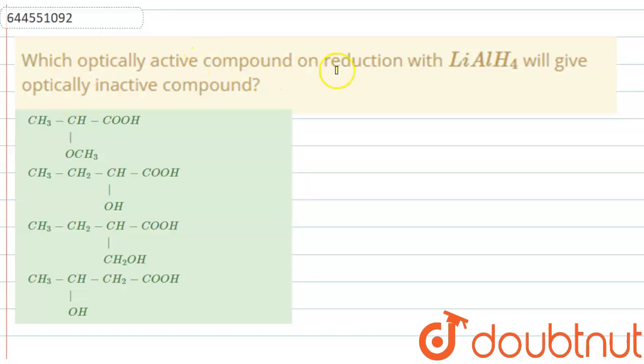The question here is which optically active compound on reduction with LiAlH4 will give optically inactive compound?